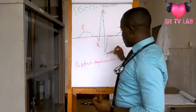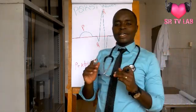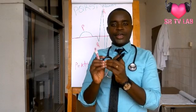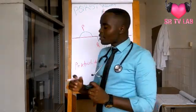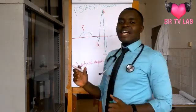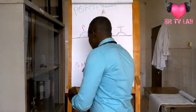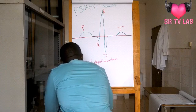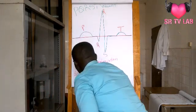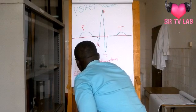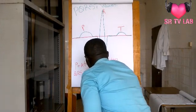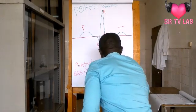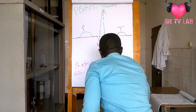There is a QRS complex — we say they are complex because it is a combination of more than one wave: Q, R, and S. The QRS complex represents ventricular depolarization.